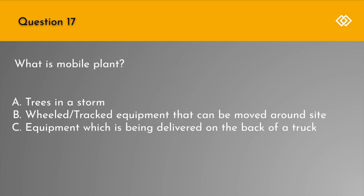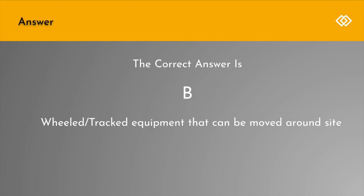Question 17. What is mobile plant? A. Trees in a storm. B. Wheeled or tracked equipment that can be moved around on site. Or C. Equipment which is being delivered on the back of a truck. The correct answer is B: Wheeled or tracked equipment that can be moved around site.